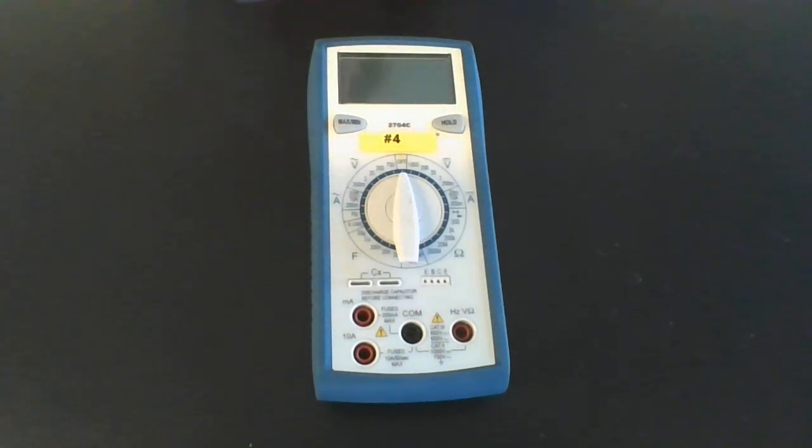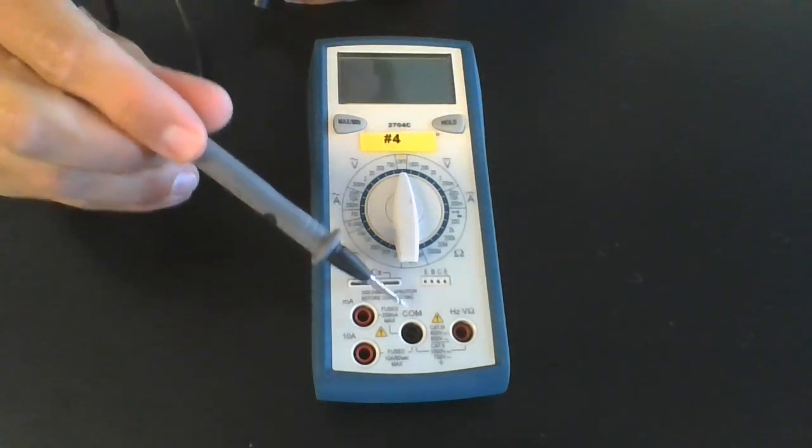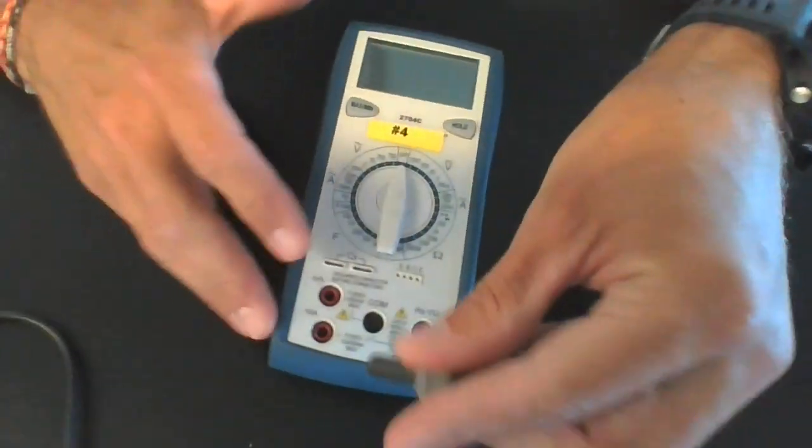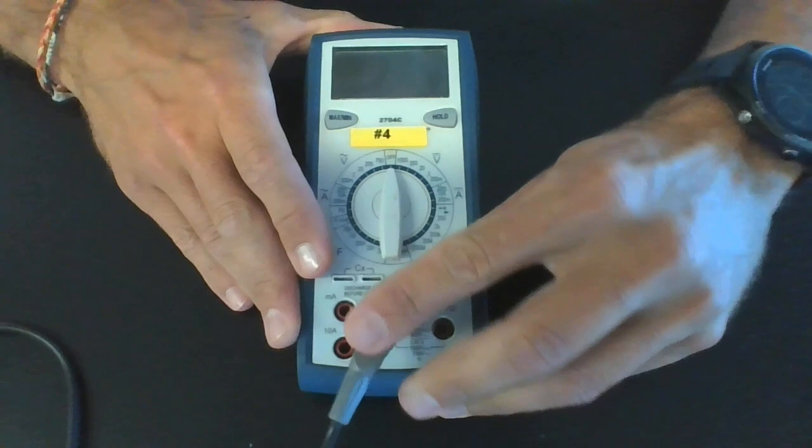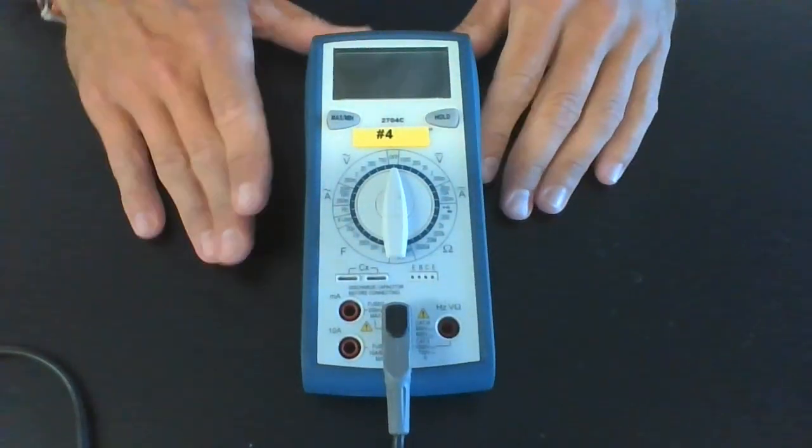So the first thing you need to know is that this black wire, it's over here, you see it says COM. The black wire is always connected into the common measurement. So that means it's common for everything you want to measure.